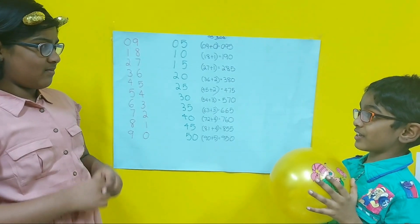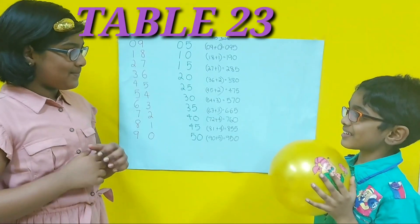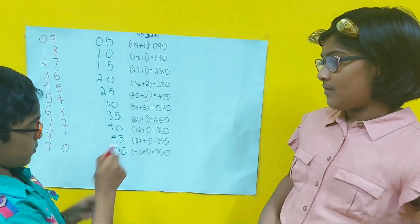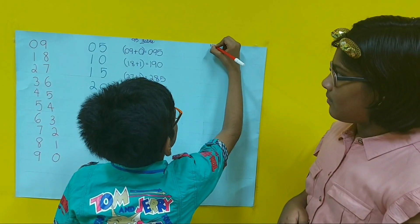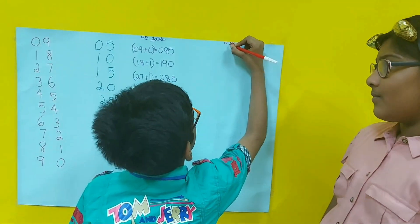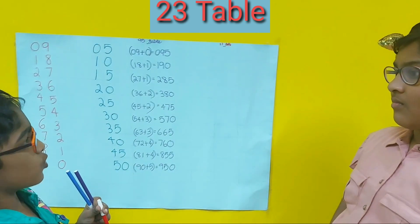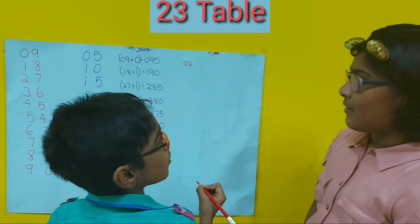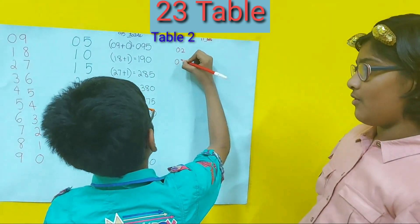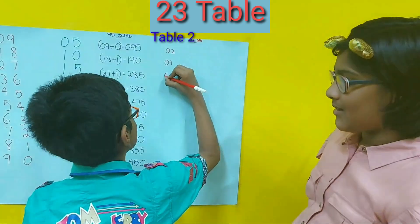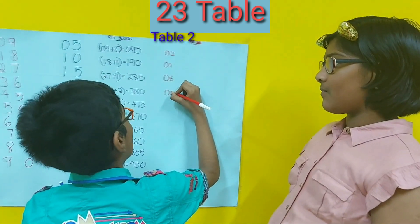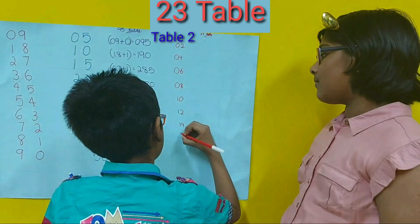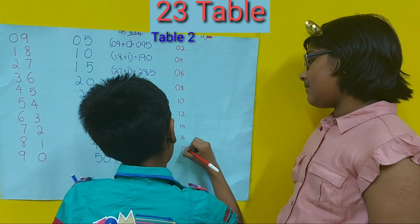Sure. Which number will I try? 23? That's a good number. Okay, let's see. Can you hold my board please? Sure. And then you can have the pens. So first I'll write the 23 table. I'll write the 2s and 3s. First the 2s: 02, 04, 06, 08, 10, 12, 14, 16, 18, 20.